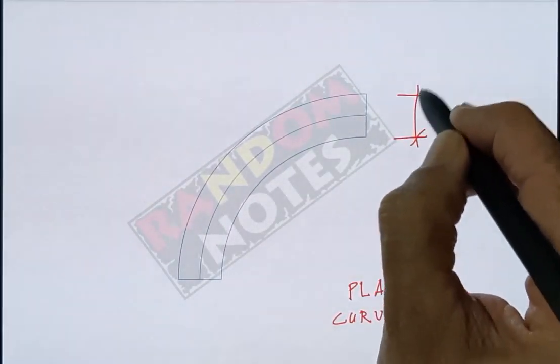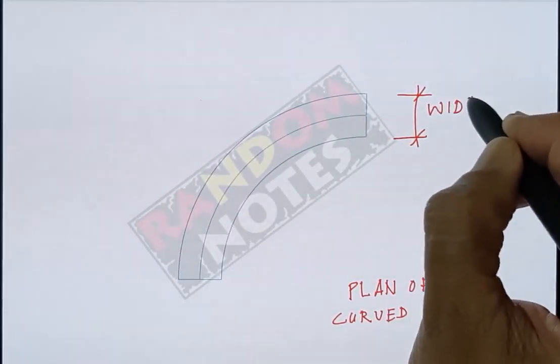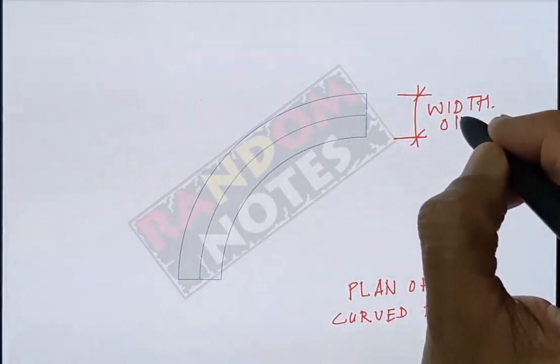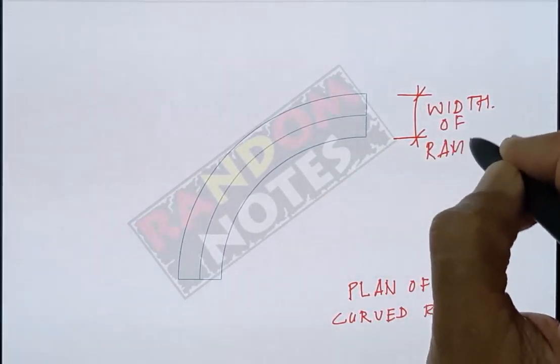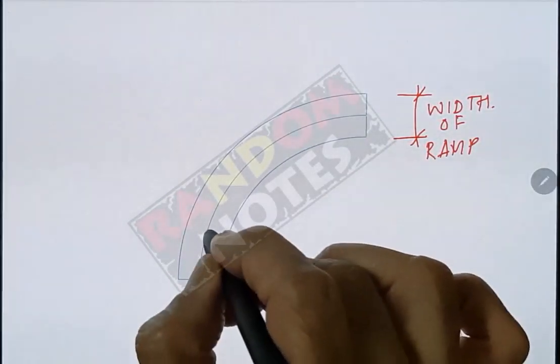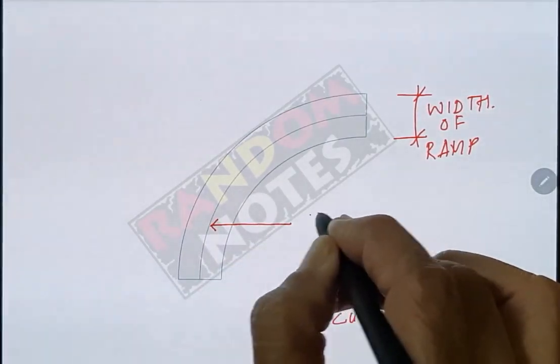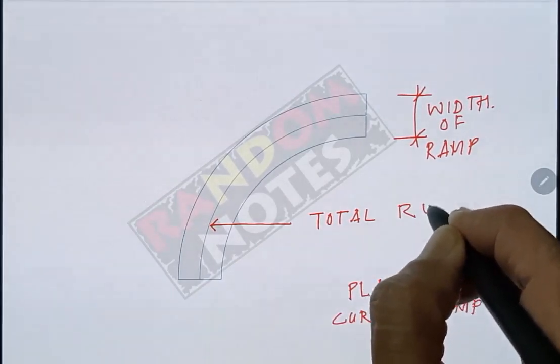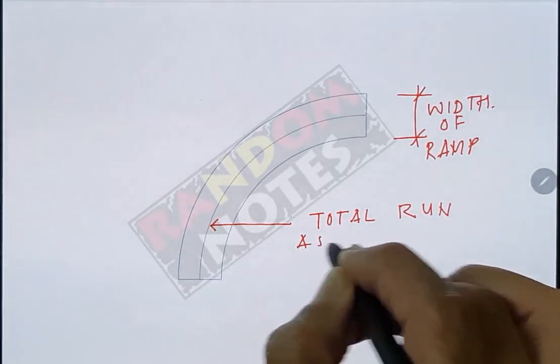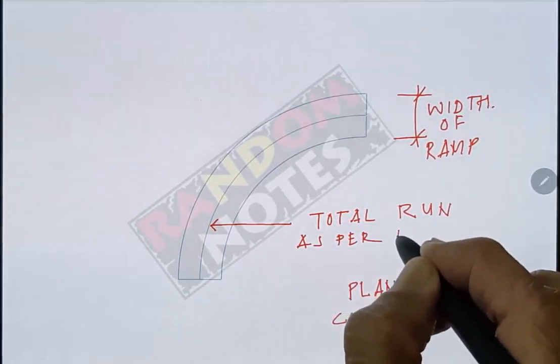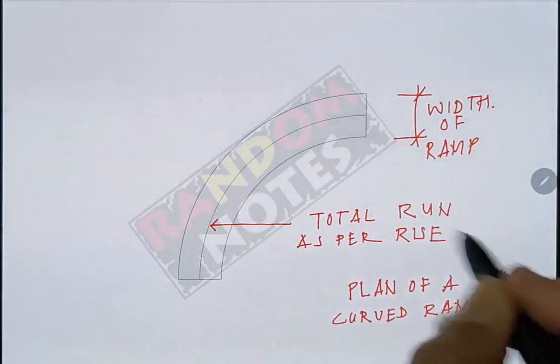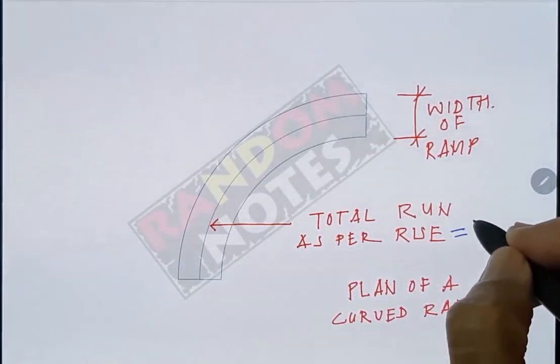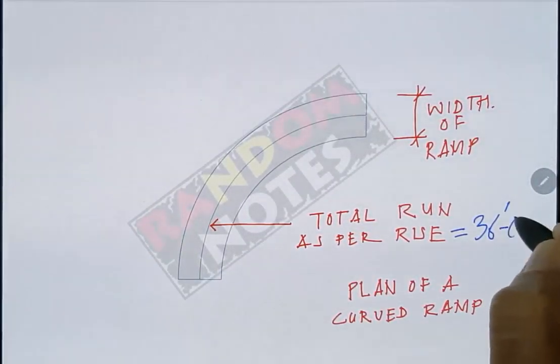This is the width of the ramp. For getting the correct slope in the ramp this central arc will be taken as the total run or the going of the ramp. This is calculated as per the gradient required for the rise of 3 feet. The total run is 36 feet for a rise of 3 feet.